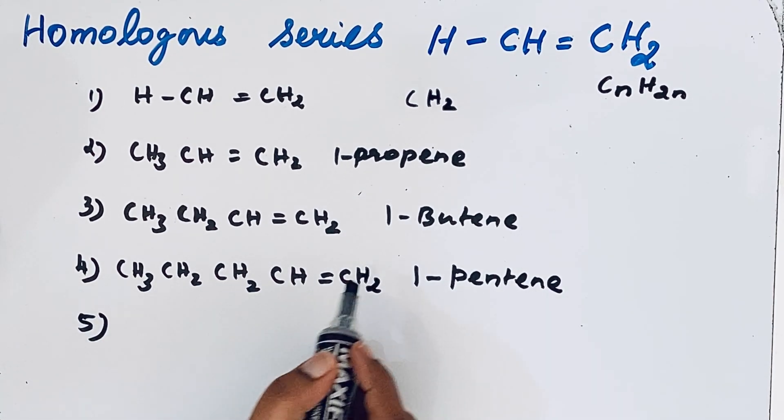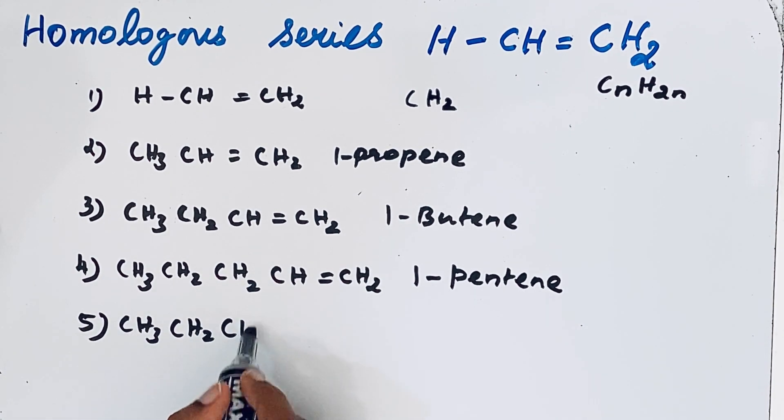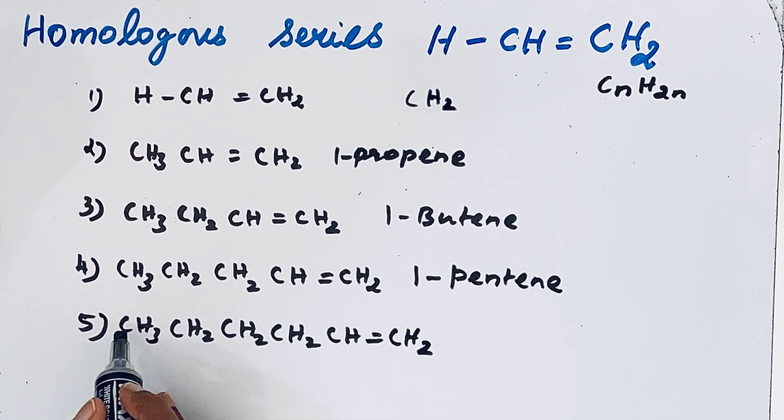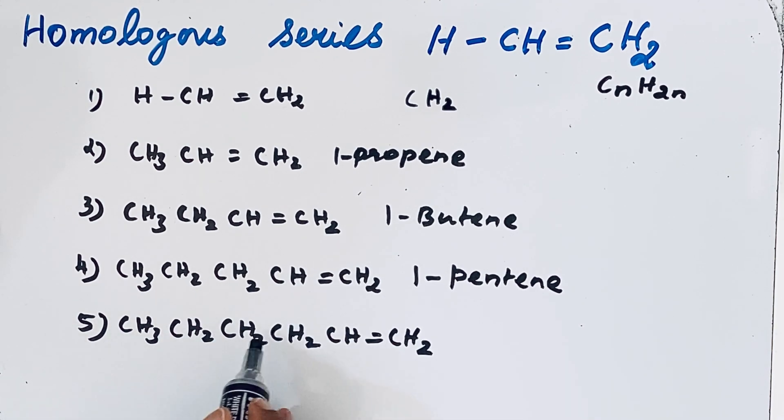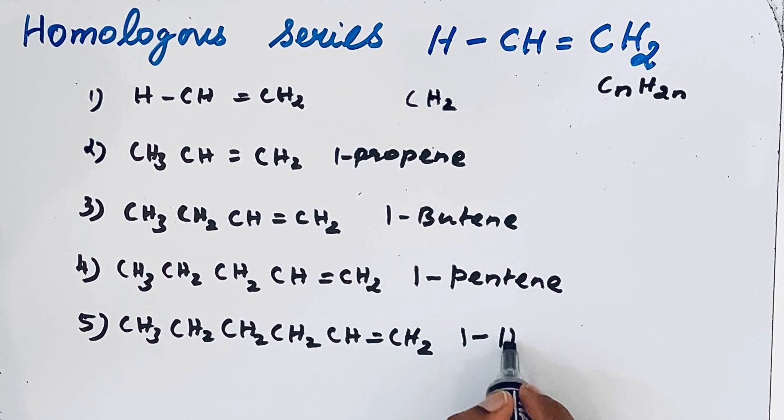The fifth one, again we are going to add that CH2 group, which is CH3-CH2-CH2, then one more CH2-CH2-CH=CH2. Now count the number of carbon atoms: one, two, three, four, five, six. So hexene, one-hexene.